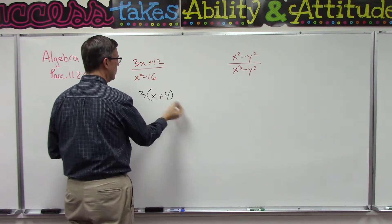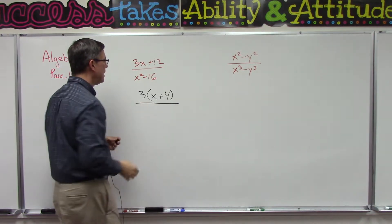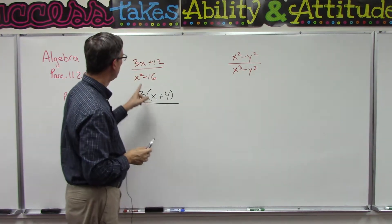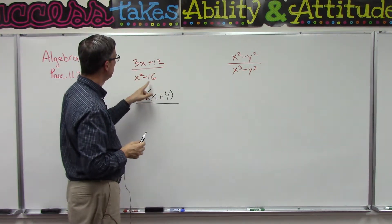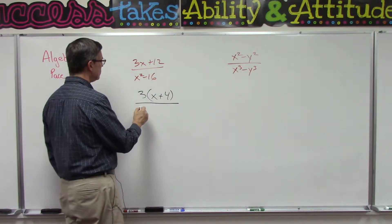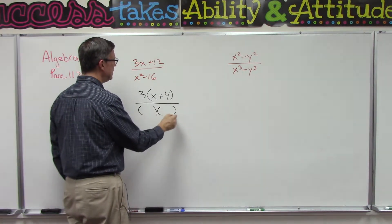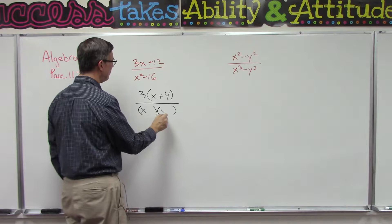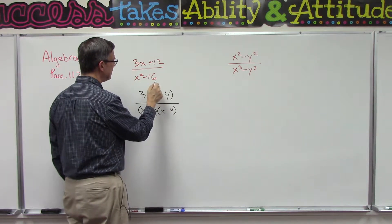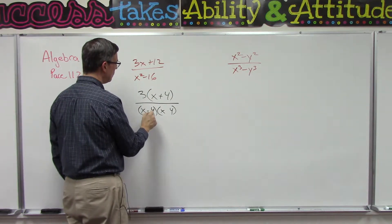All right, x² - 16. How do we factor that? It's the difference of perfect squares: x² and 16 is 4². So we set up the two parentheses and we put the x in the front because x times x is x², 4 times 4 is 16. And then what we do is plus and minus—one is positive, one is negative.